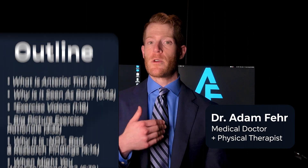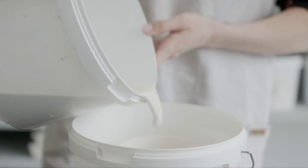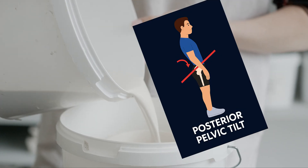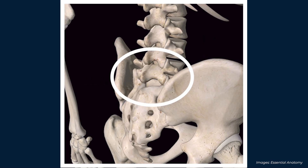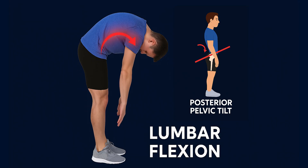Anterior pelvic tilt refers to a position of the pelvic bone. You can think of the pelvis like a bucket of water. Anterior tilt is when that bucket tilts forward so that the water would pour out the front. Posterior tilt is the opposite, when the bucket tilts backward. The pelvis also connects directly to the spine, so pelvic tilt position also influences lower back position. Anterior tilt coincides with lumbar extension, posterior tilt with lumbar flexion, which leads us to why people are told that anterior pelvic tilt is a problem.